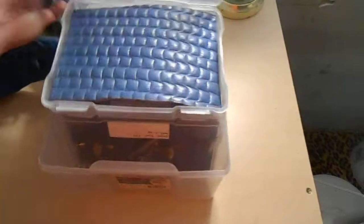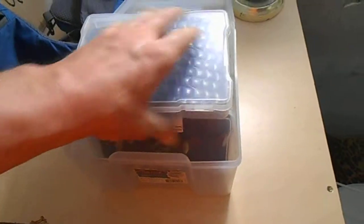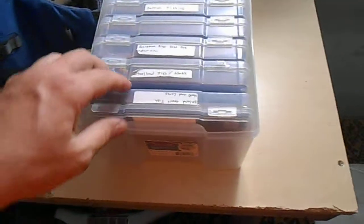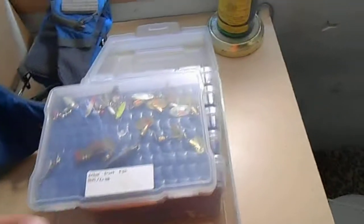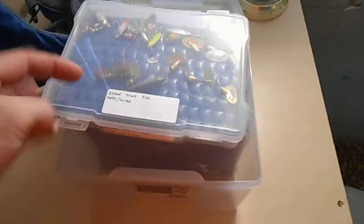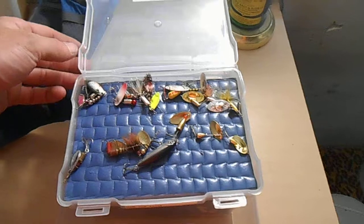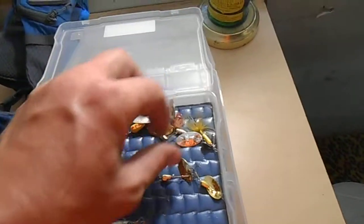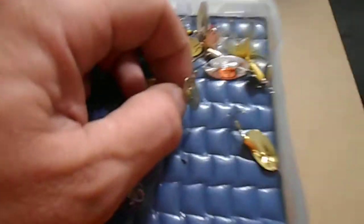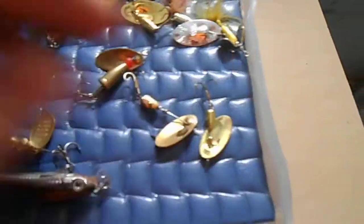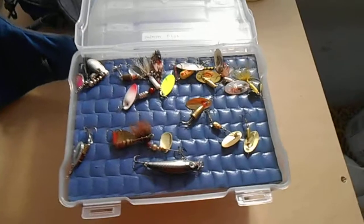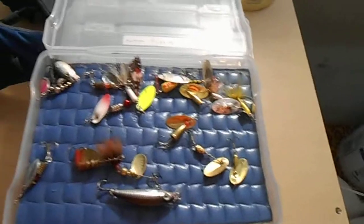For example, these are all my inland trout spinners - my Panther Martins, my Blue Fox nymph spinners. They're all hooked to the foam so they don't get tangled up, they don't fall out. I can grab one, tie it on, and get going. The more efficient you are with your lures and retying, the more time you have to fish.